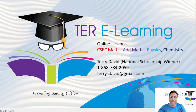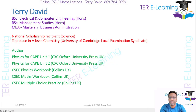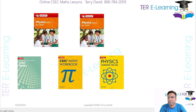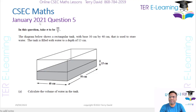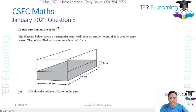Hi guys, Terry here again. In this video I'm going to be looking at the solutions for January 2021 Question 5. The question shows a rectangular tank with a base of 50 cm by 40 cm that is used to store water. The tank is filled with water to a depth of 15 cm. The first part of the question asks us to calculate the volume of the water in the tank.